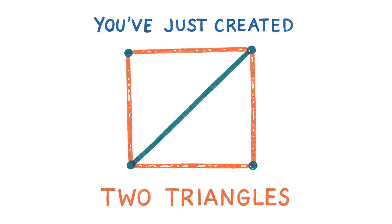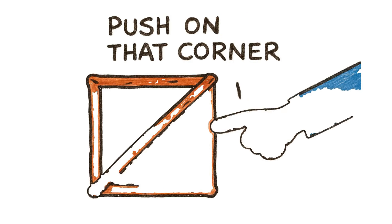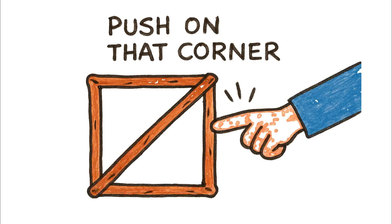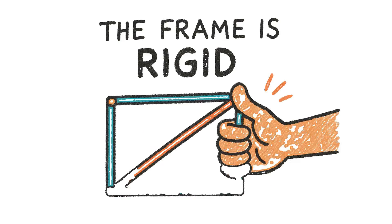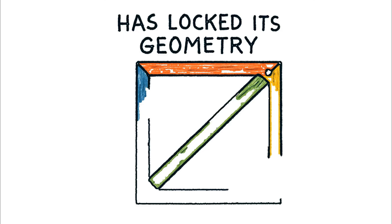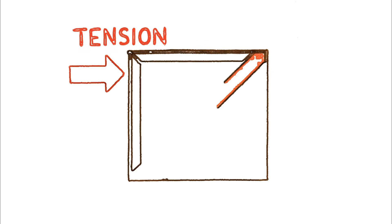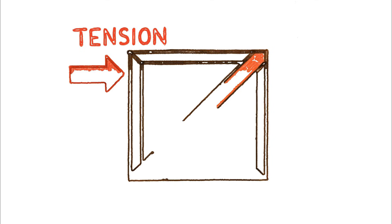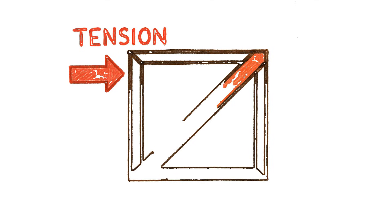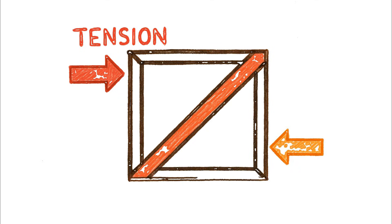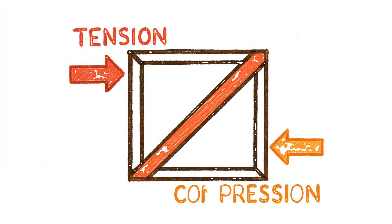You've just created two triangles. Push on that corner now, and nothing happens — the frame is rigid. That diagonal brace has locked its geometry. This works because it introduces the two fundamental forces of engineering: tension, the act of pulling something apart, and compression, the act of pushing something together.